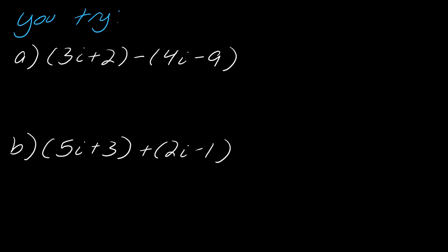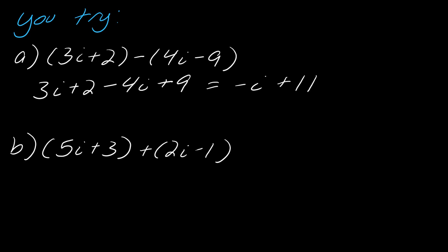Notice here with part a — now I'm subtracting, so I want to take a second to distribute that minus sign. If I collect what I've got, this is going to be negative i plus 11. And then for the other one, 5 plus 2 gives me 7i, and then 3 minus 1 gives me 2. So that's it for those.